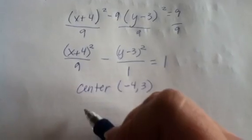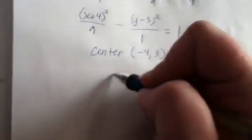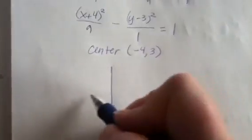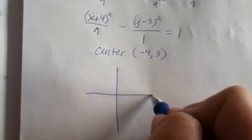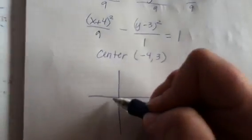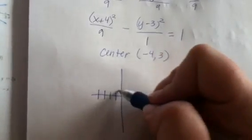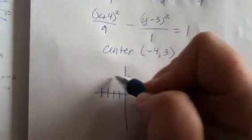Now before we find all the other details, I really think we ought to do a graph first because these can be kind of tricky when the center is at a different location. Okay, so we're going to go to the left 4 and up 3 and put a point.